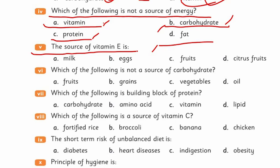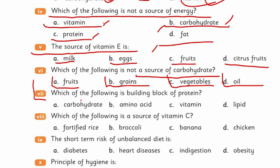Vitamin E is in milk, eggs, fruits, and citrus fruits. Which of the following is not a source of carbohydrate? Carbohydrate is not in fruits, not in grains, not in vegetables, or not in oil? Encircle the one that doesn't have it.